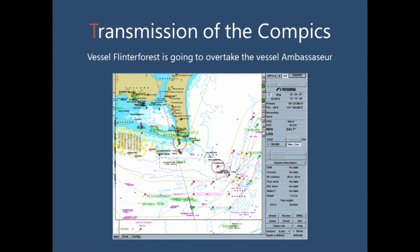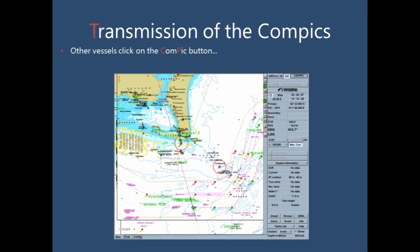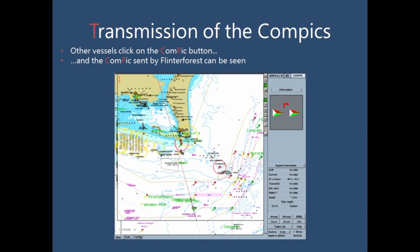Here I will give an example of how this system could work. In this situation, the vessel Flinders Forest intends to overtake the other vessel, which is Ambassure. Flinders Forest clicks on the overtake pictogram and there will be a flashing red exclamation mark above the vessel transmitting this pictogram. The vessel Ambassure could then click on the pictogram, and in the top right corner you can see a pictogram tab which you could click, and then the pictogram of an overtaking vessel will appear.